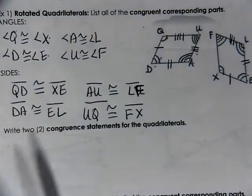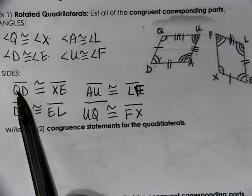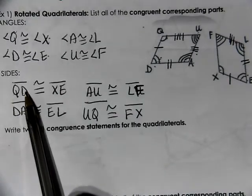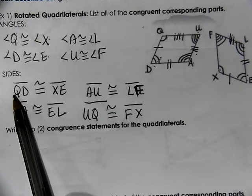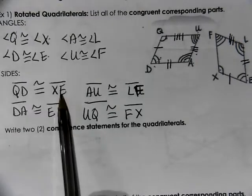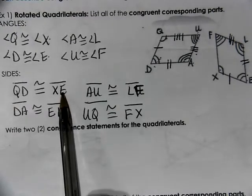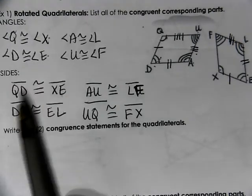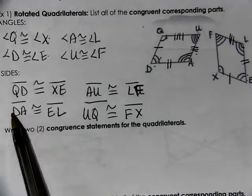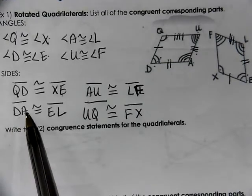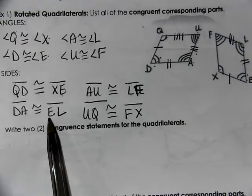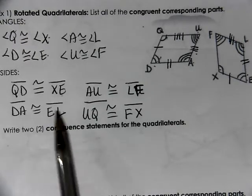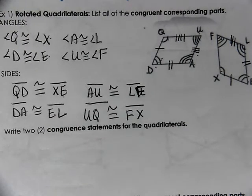A common question: do you have to write QD in that order, or could you write DQ? The answer is yes, you can reverse it — you just have to make sure the other side is EX accordingly. Could you say AD instead of DA? Of course — it just means the other side has to have LE instead of EL. It's all about matching.